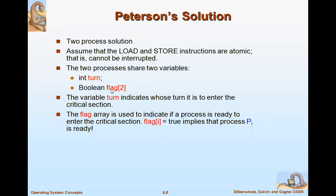'Flag' is a boolean variable. When flag[i] is equal to true, it implies that process Pi is ready to enter the critical section. So 'turn' indicates whose turn it is, and 'flag' indicates whether the process is ready or not. If flag[i] is false, the process is not ready.